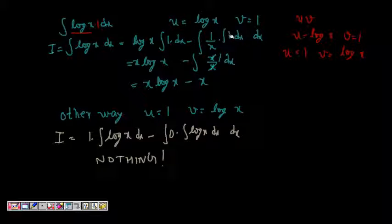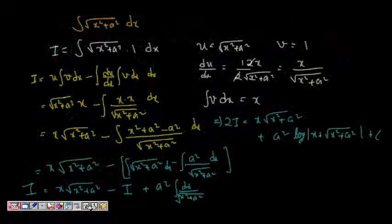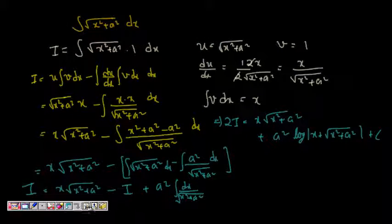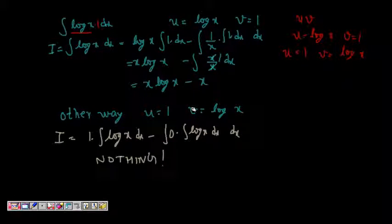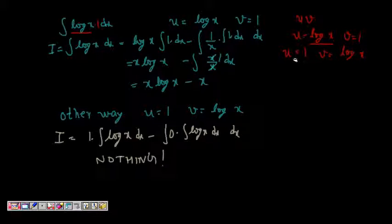We need to choose which is u and which is v. In the formula, we integrate v twice and differentiate u once, so we should choose u that is easy to differentiate and v that is easy to integrate. Since log x is difficult to integrate, we choose u = log x and v = 1, which is easier to integrate.